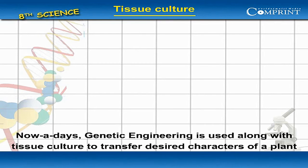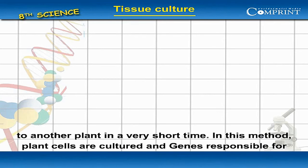Nowadays, genetic engineering is used along with tissue culture to transfer desired characters of a plant to another plant in a very short time.